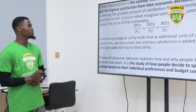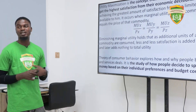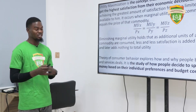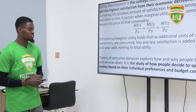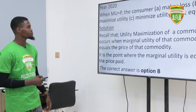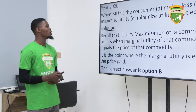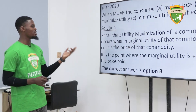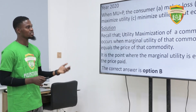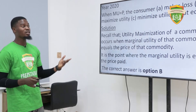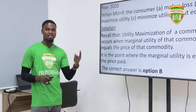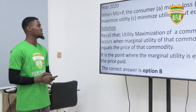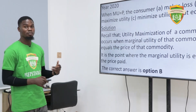The theory of consumer behaviour has to do with how consumers react or behave to changes in price and changes in the level of their income given their budget. In 2020, we are asked: when MU equals P, the consumer A) makes a loss, B) maximizes utility, C) minimizes utility, D) is at equilibrium. We recall that utility maximization is a solution where marginal utility equals the price of that commodity. So the appropriate answer is option B, which is maximize utility.